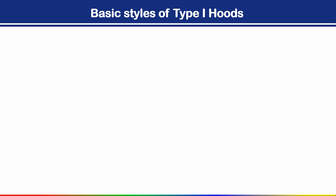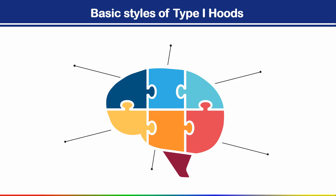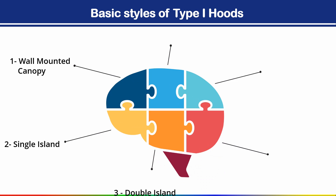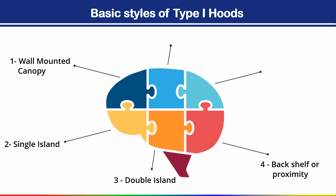Now let's see the basic styles of type 1 hood. There are different types of hood. First, we have a wall-mounted canopy type of hood, then single island, double island hood, then back shelf or proximity type of hood, pass over, and finally we have an eyebrow type of hood. All these hoods are type 1 only, meaning we use them for cooking appliances.